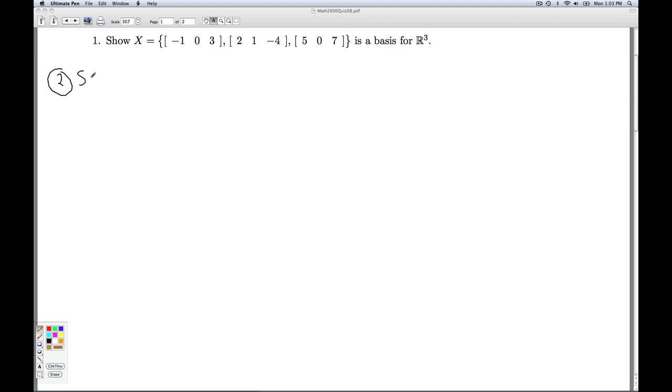Now to show that it spans R³, I have to pick a generic vector in R³ and show that it's a linear combination of these guys. So I'm just going to let (a, b, c) be some generic vector in R³. I have to show that there's a linear combination of these three vectors that creates this vector. So I'm back to linear combinations again.